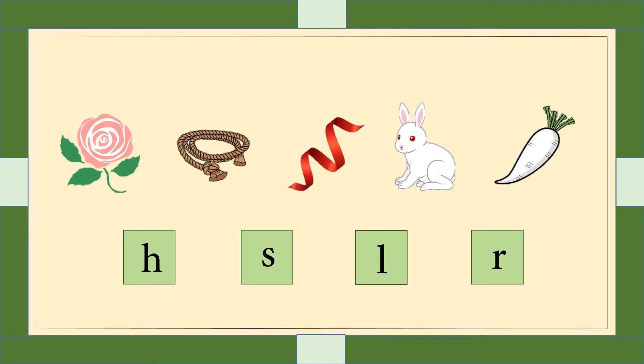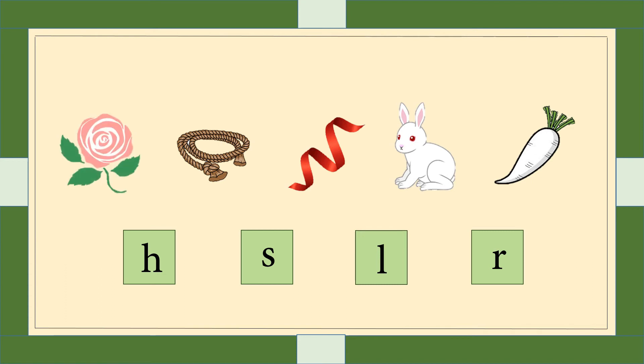Now we will know the names in English. First picture is Rose, second picture is Rose, third picture is Ribbon, fourth picture is Rabbit, and the last picture is Radish. All these picture names begin with the 'R' sound.